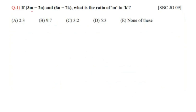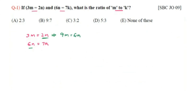Question number 1: If 3m equals 2n and 6n equals 7k, what is the ratio of m to k? From 3m = 2n, multiply both sides by 3: 9m = 6n. Since 6n = 7k, we get 9m = 7k, therefore m to k equals 7 to 9. So 7:9 is the answer.